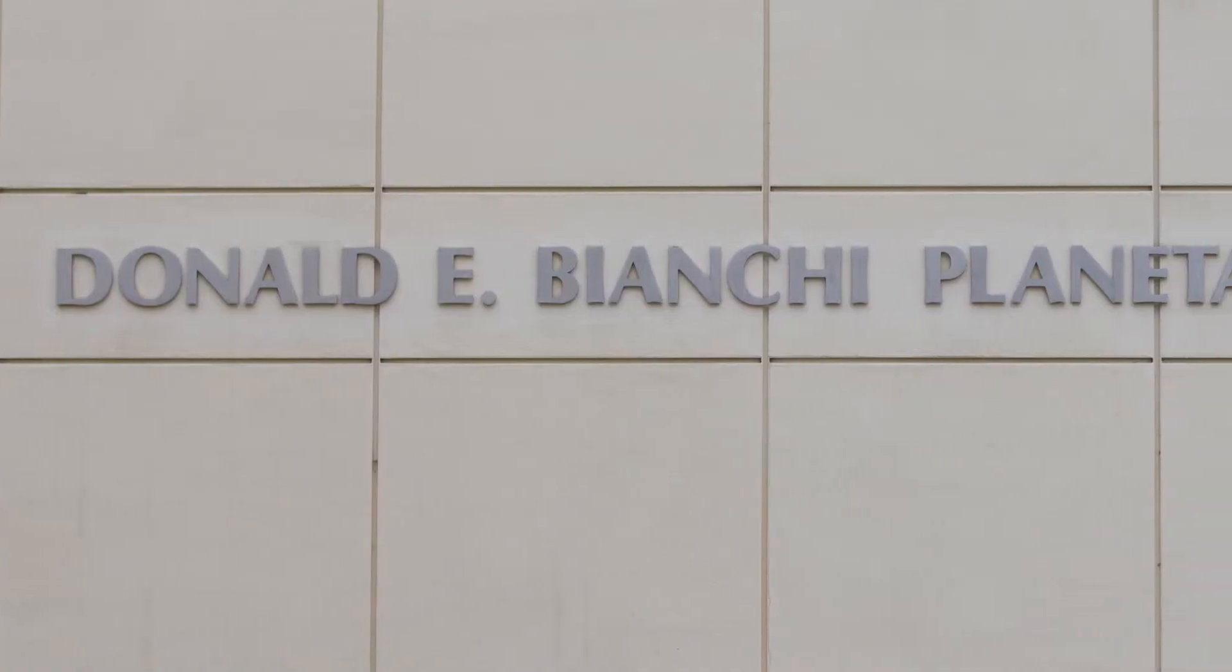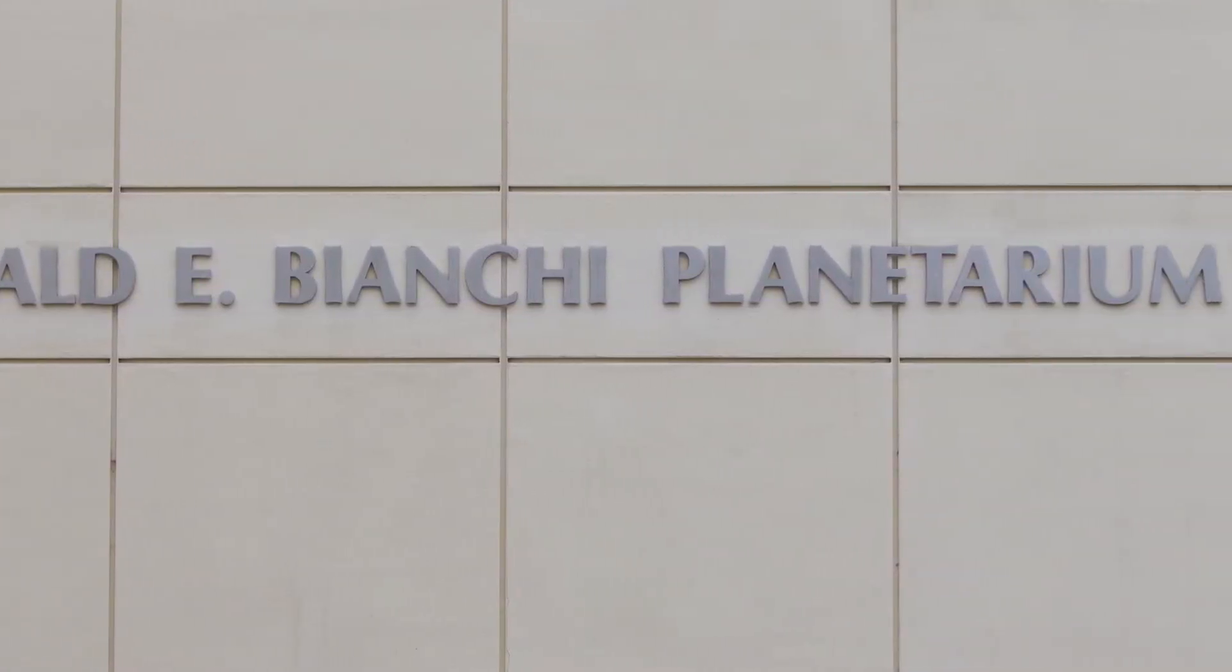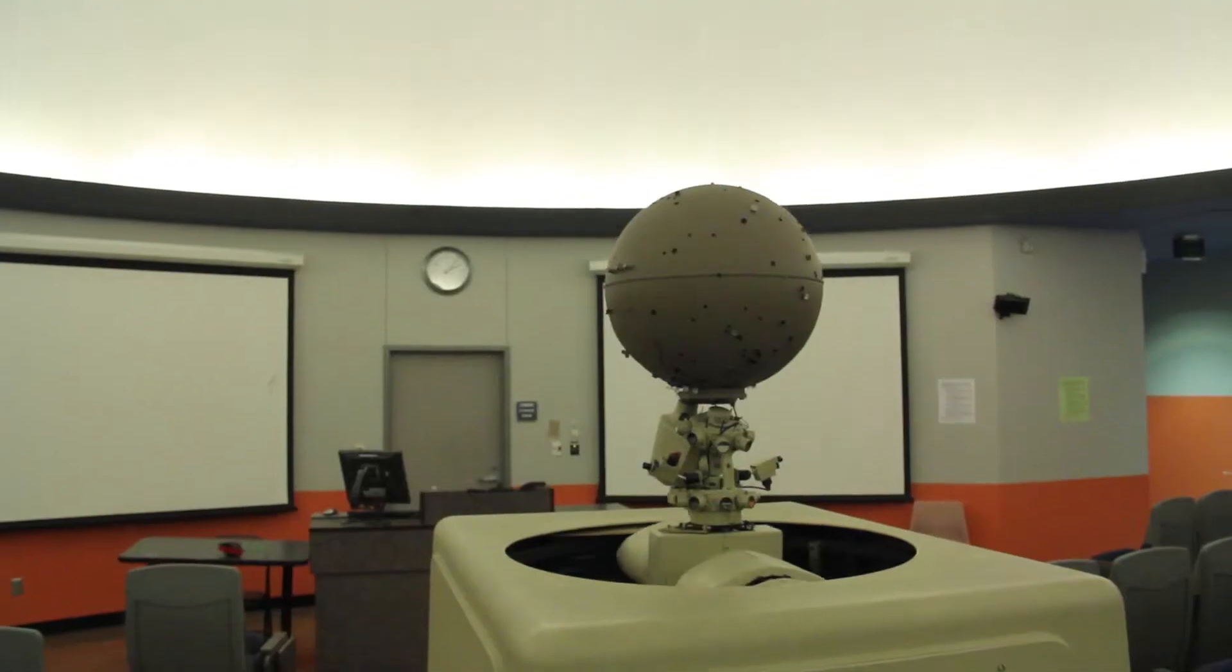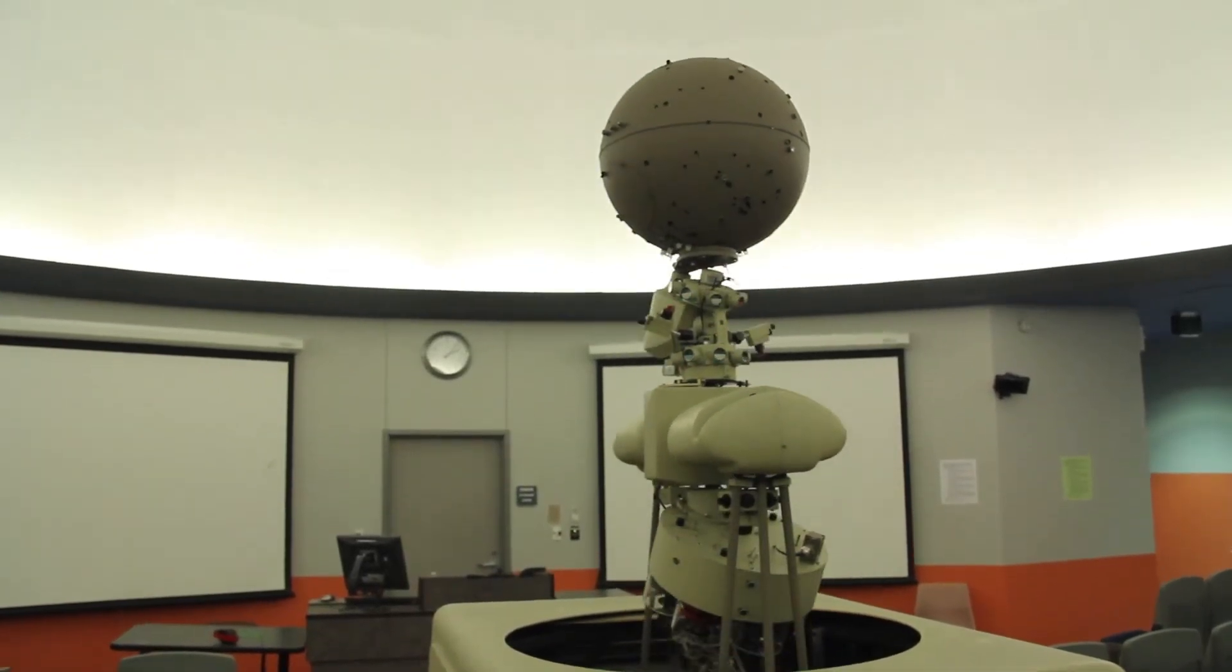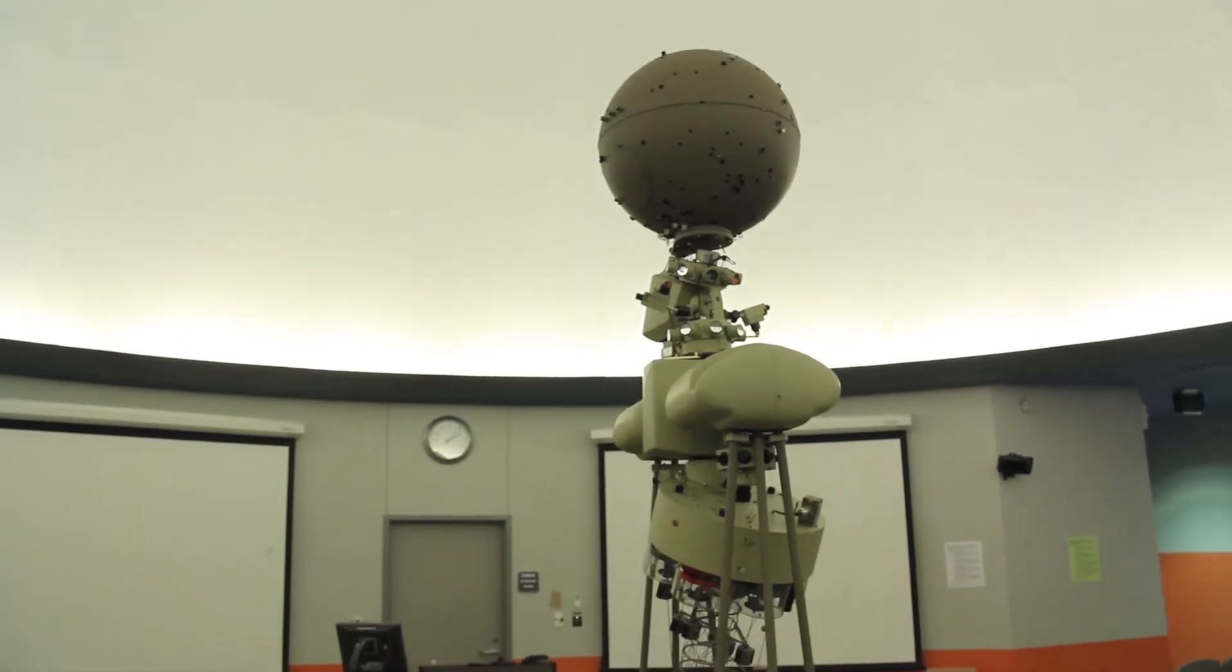The planetarium is called Bianchi Planetarium because it was Dean Bianchi under whom the planetarium was built. He was the dean in the mathematics and science college. The projector that we have here is a projector that dates back to early 90s. It was put here when the planetarium was built in 1990, 1991. It was built by a company back in Pennsylvania, Spitz, and it's a model 512. We have had it here since the planetarium was built. It still works quite well.